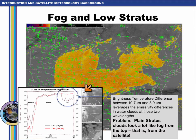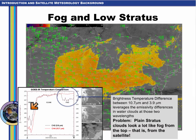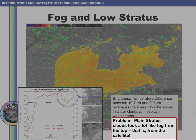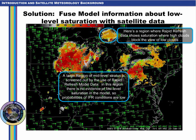Computed brightness temperatures at 3.9 and 10.7 microns are different because of these emissivity differences. Note that cirrus temperatures are different as well, because of sub-pixel effects described in other Satellite Foundation courses for GOES-R. The problem is that stratus and fog can look very similar from the top of the cloud deck — it's very hard for the satellite to view the cloud base. Because mid-level stratus aren't usually an important aviation hazard, the aviation-focused IFR probability field was developed to screen out regions of mid-level stratus and highlight only regions of fog on the ground.